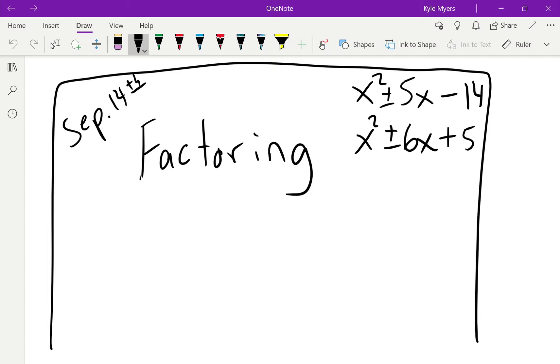Well, almost everyone, because at some point it becomes very repetitive. But anyways, today we're doing four problems. We've got x² + 5x - 14, x² - 5x - 14, x² + 6x + 5, and x² - 6x + 5. So let's dive right in.